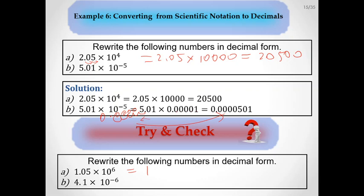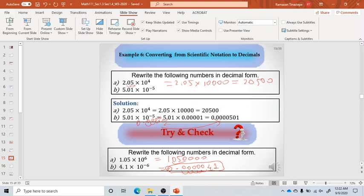Stop the video and try the final try and check problems yourself. The answers: 1,000,000, and 4.1. Check your work against these solutions.